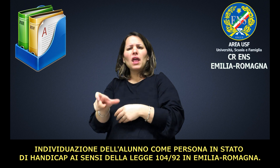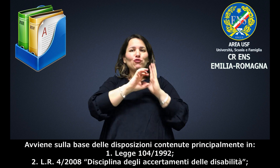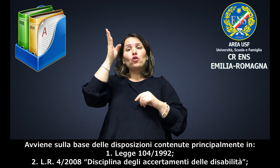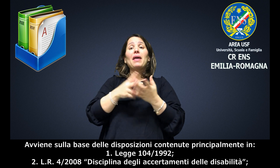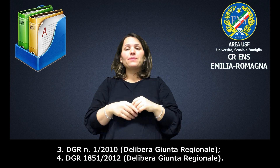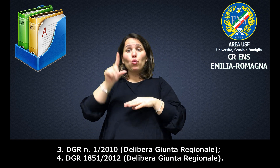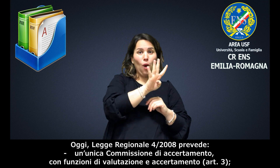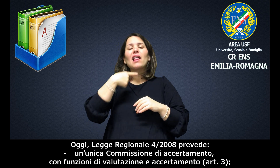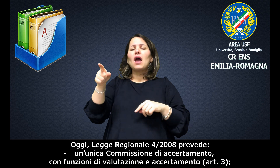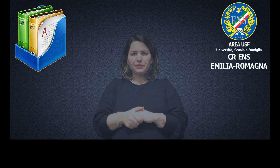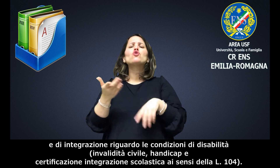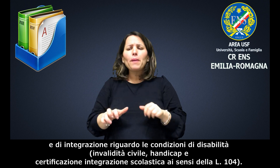Individuazione dell'alunno come persona in stato di handicap ai sensi della legge 104 del 1992 in Emilia-Romagna. Avviene sulla base delle disposizioni contenute principalmente nella legge 104 del 1992, nella legge regionale 4 del 2008 che disciplina gli accertamenti della disabilità, nella delibera della giunta regionale numero 1 del 2010, e nella delibera giunta regionale 1851 del 2012. La legge regionale 4 del 2008 prevede un'unica commissione di accertamento con funzione di valutazione e accertamento, e che la certificazione per il riconoscimento della disabilità sia il documento comune per l'accesso a tutti i percorsi agevolati, riguardo le condizioni di disabilità, invalidità civile, handicap e certificazione e integrazione scolastica ai sensi della legge 104.